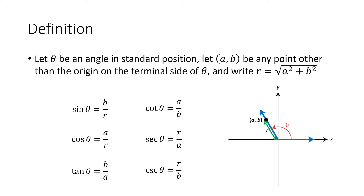We've got two big questions here. The first question is: does it matter which point (a, b) we pick? The second question is: does this new definition match up with the existing definition that we already had? That's important because we don't want to have to worry about which definition we're using when talking about the sine of an angle.